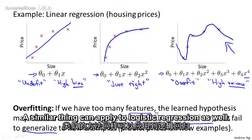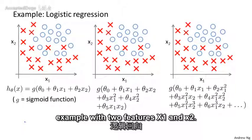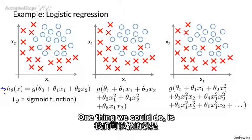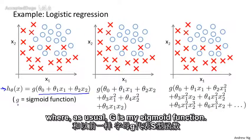A similar thing can apply to logistic regression as well. Here's a logistic regression example with two features, x₁ and x₂. One thing we could do is fit logistic regression with just a simple hypothesis like this, where, as usual, g is my sigmoid function.